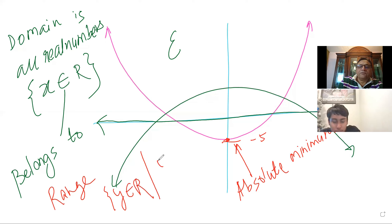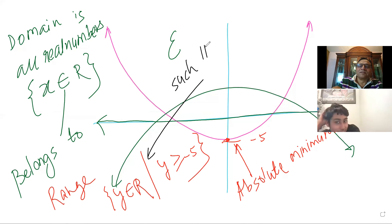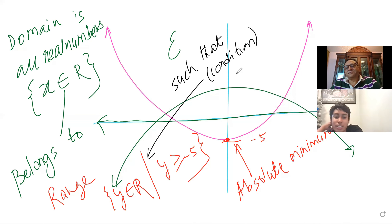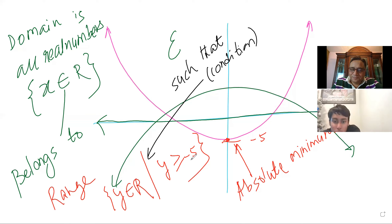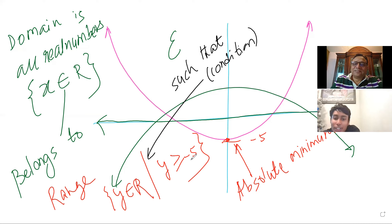Now let's talk about range. Range is the y value. So if it has an absolute minimum — let's say this value is minus 5 — in that case, what is the range of this function? It's opening up. So the range is: y belongs to real numbers, and that is a condition that y is greater than or equal to minus 5. The slash is not a division — the slash is a condition 'such that.' So this gives you the condition.